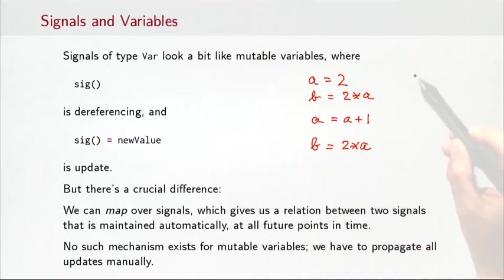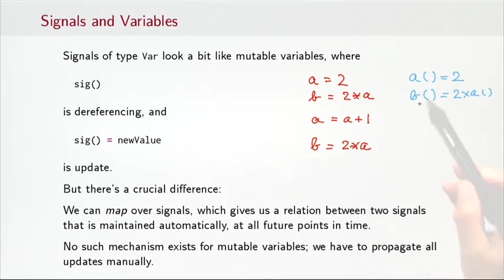Whereas if we did the same thing with signals, it would look like this. So we'd have a signal a, which is assumed to be a var signal, constant 2. The signal b is assumed to be 2 times a. And that assignment would establish already essentially the relationship between b and a forever in the future. So if now a is defined to be 3, then the signal b would be automatically updated to 6.